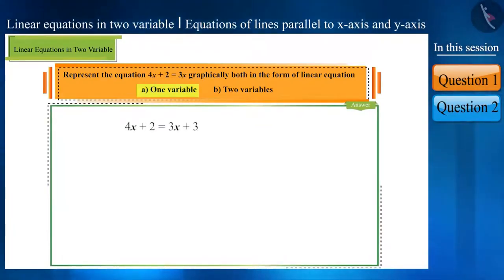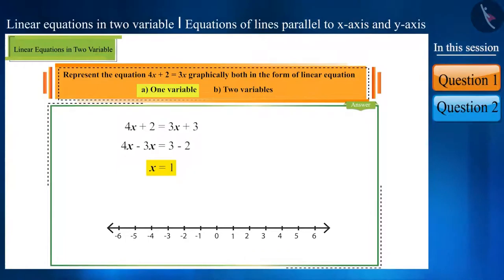Friends, this is already in the form of linear equation in one variable. Let's solve it. On simplifying it, we get x is equal to 1. As we know, linear equations in one variable have a unique solution and we represent them on a number line. Here, x is equal to 1 will be here on the number line.